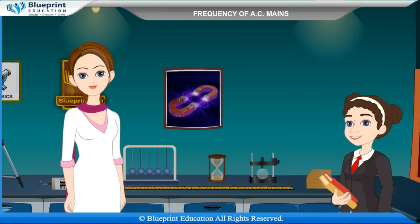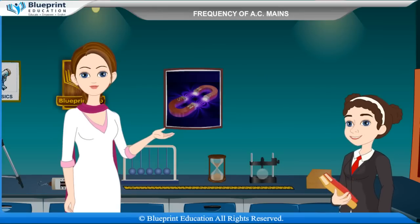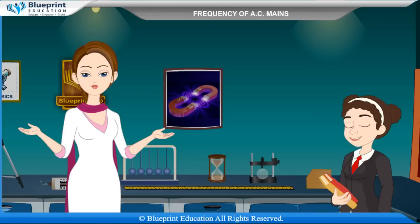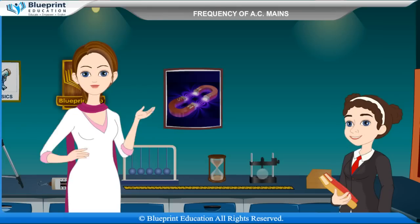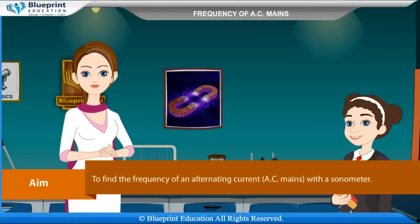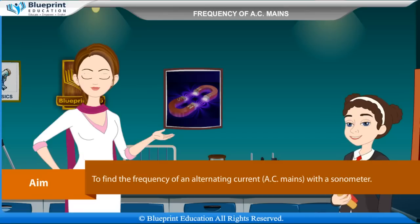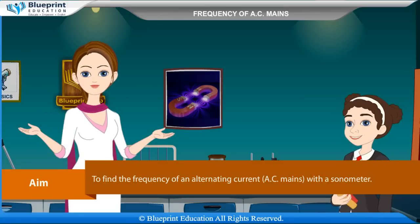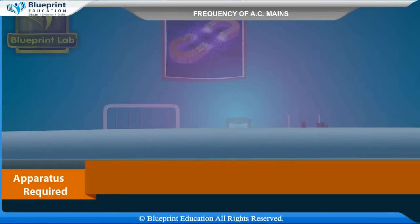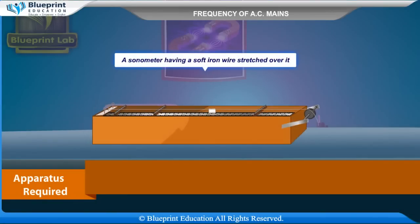Let's do an experiment to find the frequency of an alternating current AC mains with a sonometer. Our aim here is to find the frequency of AC mains with a sonometer. Apparatus required: a sonometer having a soft iron wire stretched over it.